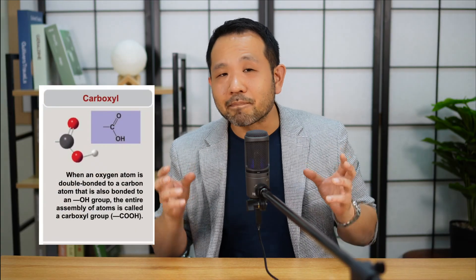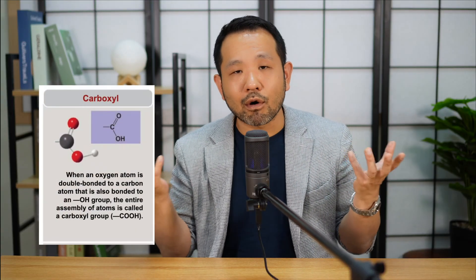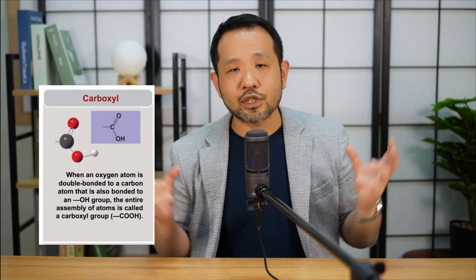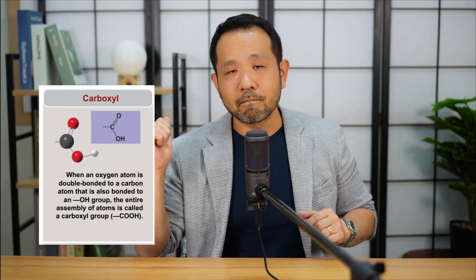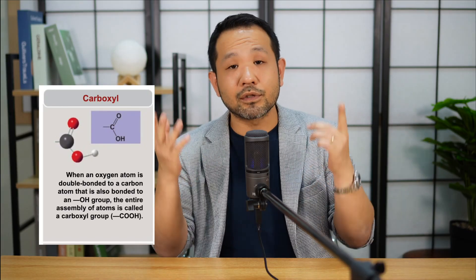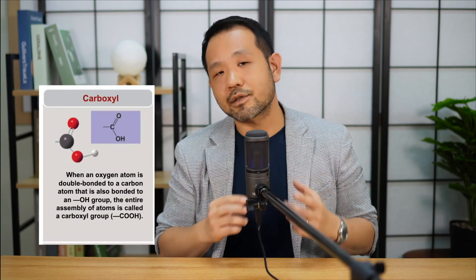The third group is the carboxyl group, which is a portmanteau of carbonyl and hydroxyl. The structure is also sandwiched: a carbon attached to an oxygen through a double bond like the carbonyl group, plus a hydroxyl group. So if you know your hydroxyl and your carbonyl, you'll be just fine with carboxyl.